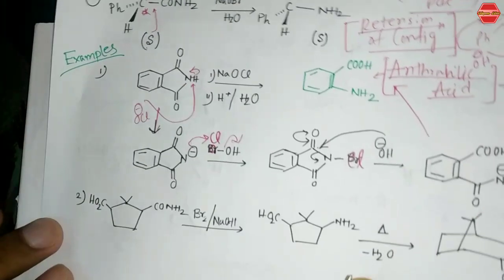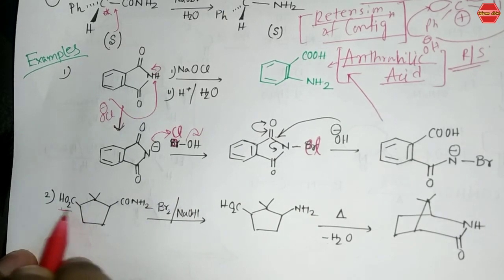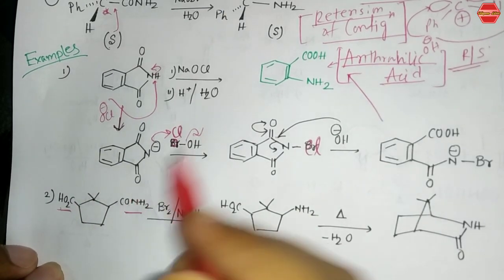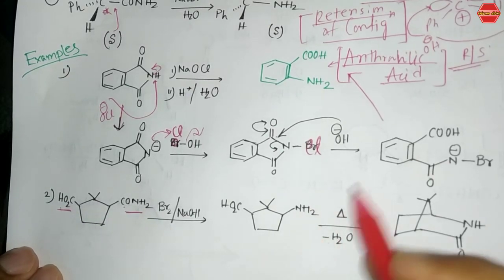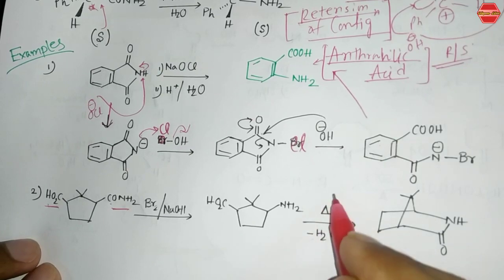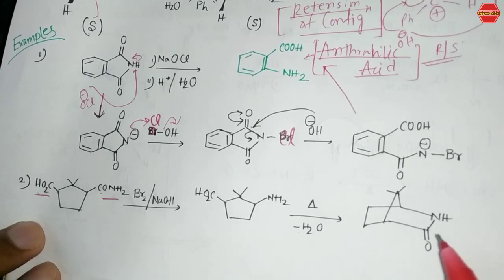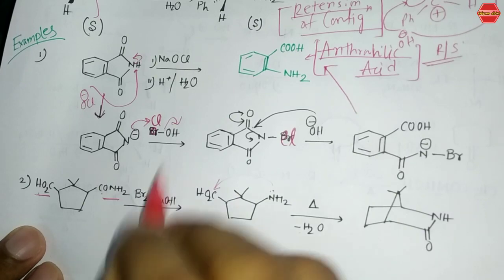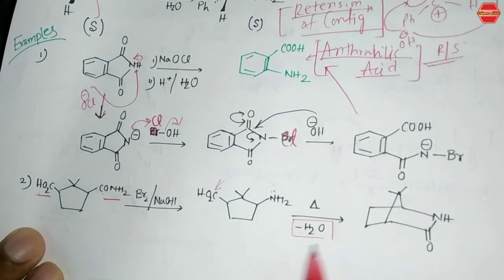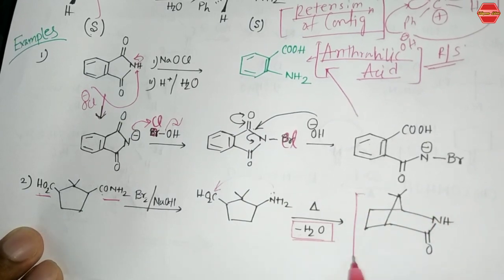In the next example, for a compound with both a C=O and an amide group, using Br₂/NaOH the amide rearranges to a primary amine. On heating this compound, the lone pair of electrons attacks the C=O bond, water leaves the system, and you get a lactam as the final product.